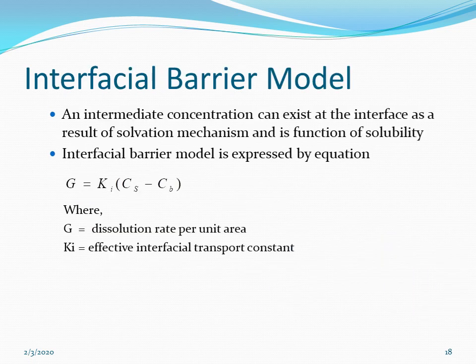The third theory is the interfacial barrier model. In this model, there is an intermediate concentration at the interface as a result of the solvation mechanism, and it is a function of solubility. The equation is: G = ki(Cs − Cb), where G is the dissolution rate per unit area and ki is the effective interfacial transport constant. In summary: the film theory relies on a stagnant diffusion layer; the Danckwerts model involves eddy currents responsible for dissolution; and the interfacial barrier model is governed by the solvation and solubility of the drug.